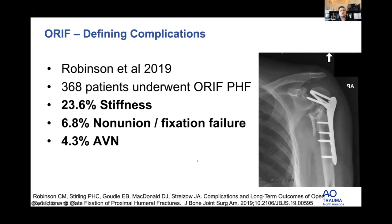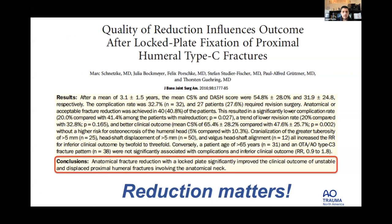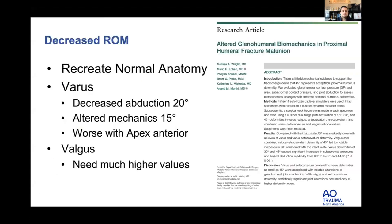Why does this matter? When proximal humerus locking plates came out in the early 2000s, they were supposed to change how these fractures were treated, but large series show a lot of complications — AVN, non-union, fixation failure, revision. It's not just implant-related; we have to get them reduced. Many large fracture papers don't quantify reduction, making it difficult to interpret outcomes, but studies that actually look at reduction find it matters significantly.